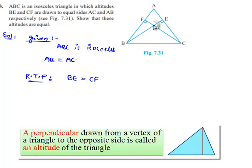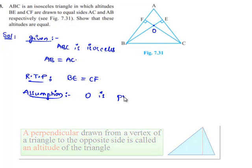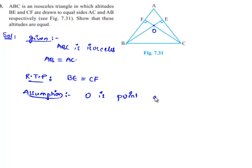Let us make an assumption that altitudes BE and CF intersect at a common point O. So let us note down the assumption that O is the point of intersection of both altitudes BE and CF.